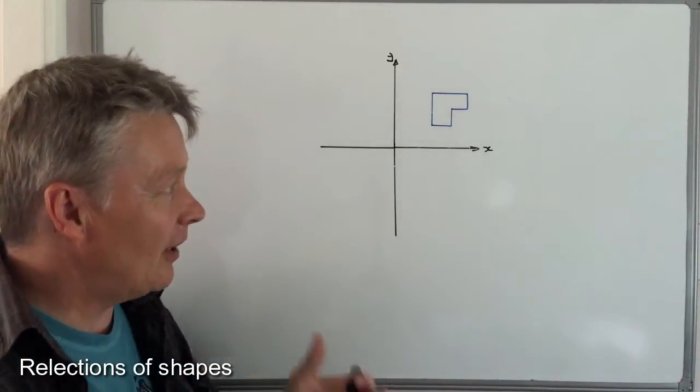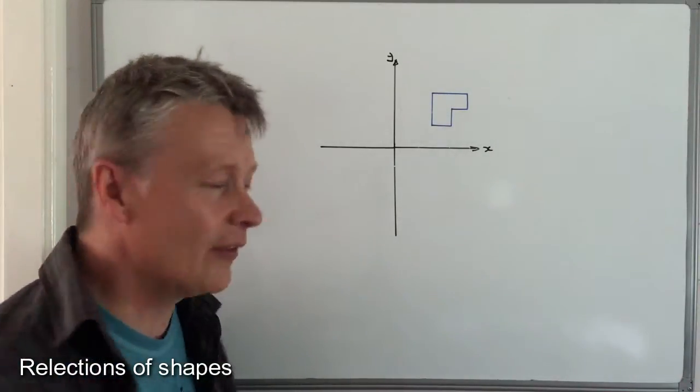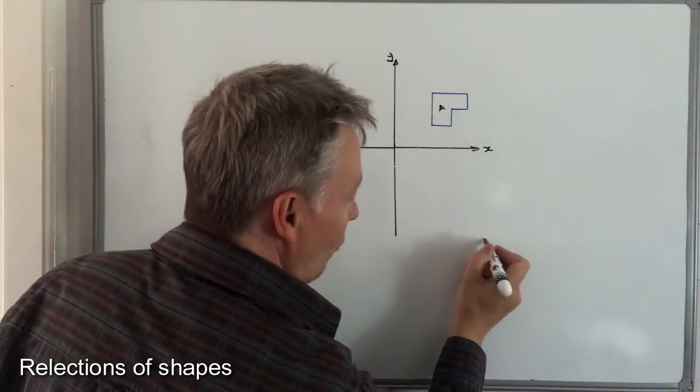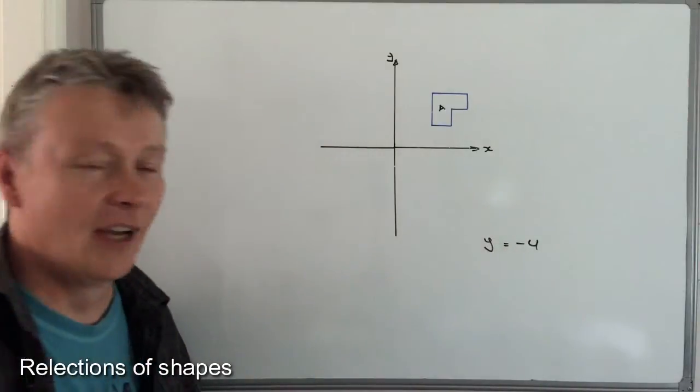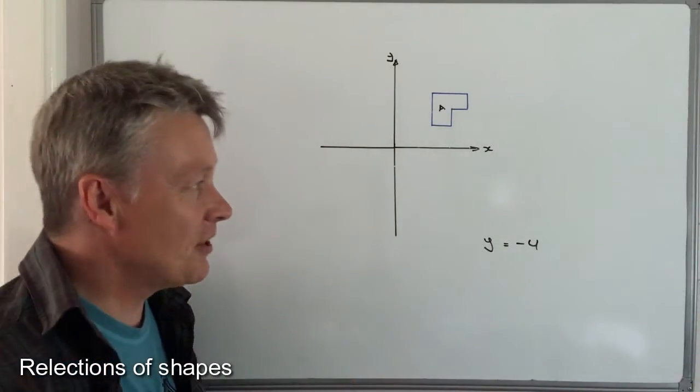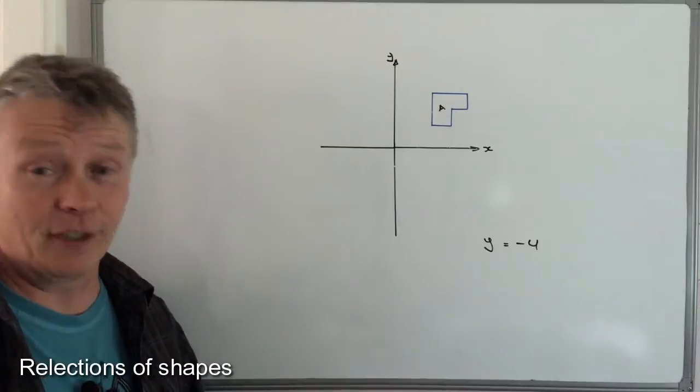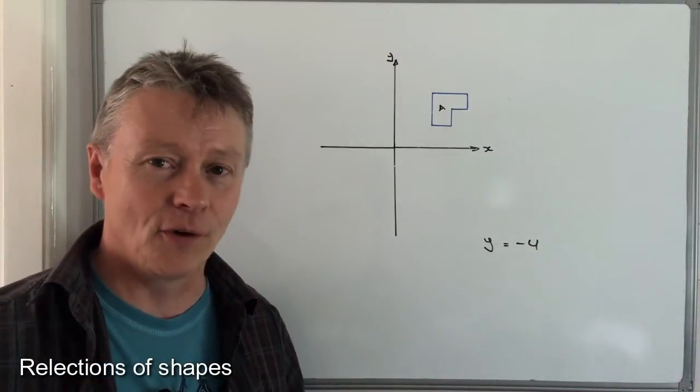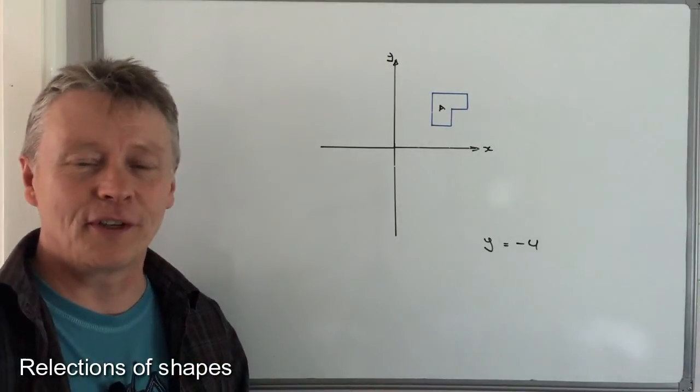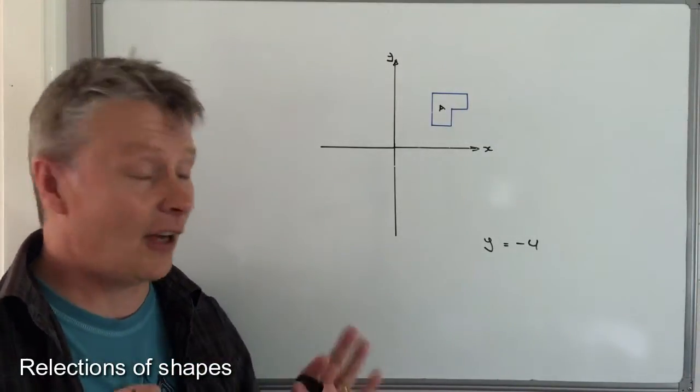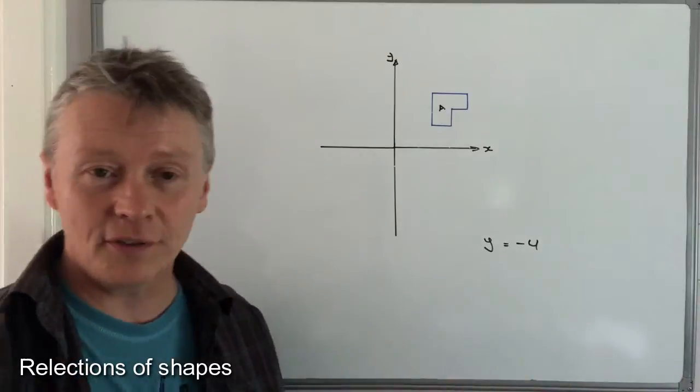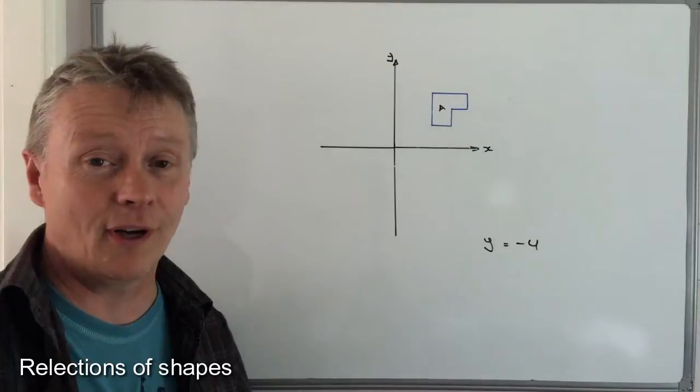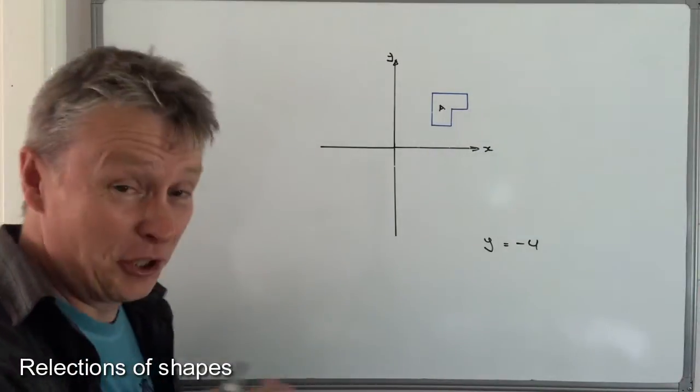The typical kind of question you're going to get at high school maths will say something like reflect shape A in the line y equals minus four. There's a couple of things you need to do: firstly, you need to make sure that you're really accurate with your drawing; secondly, you need to establish where y equals minus four. As I did in the previous video, I'm going to use the same technique. The whole idea is that you just plot some random points on the graph, some random coordinates where y equals minus four, then you join them up, draw the line, and you're good to go.